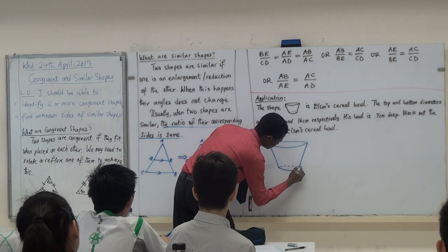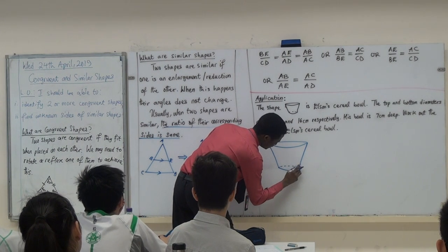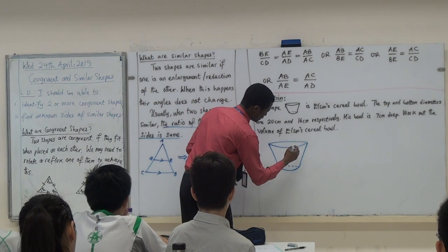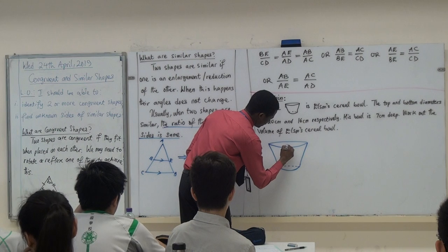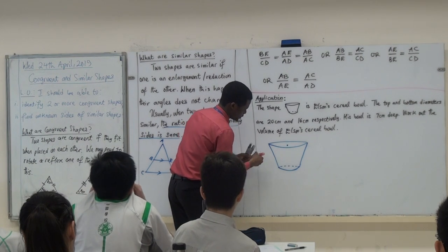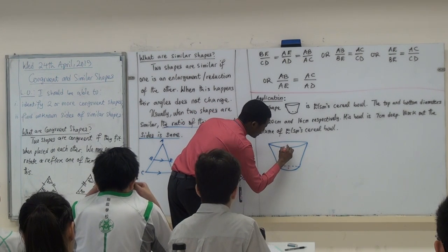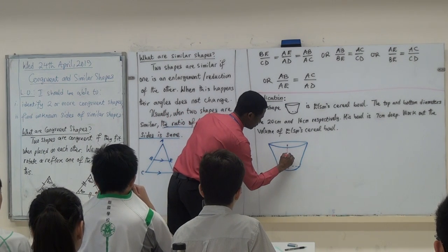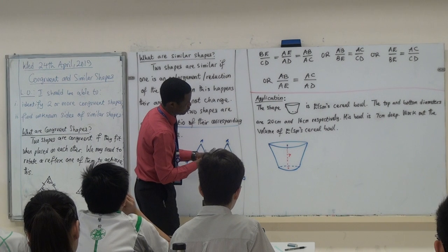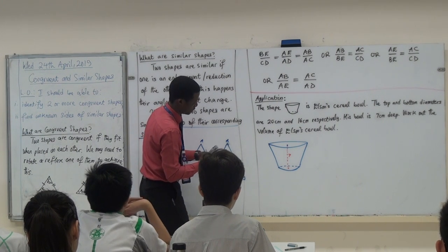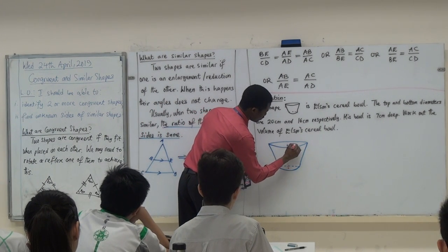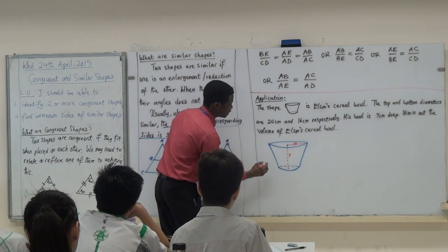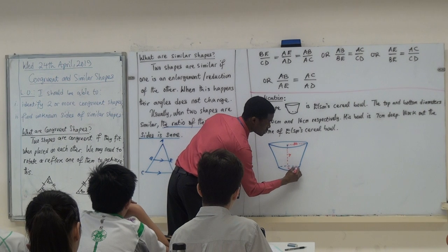Oh, you need some more. So the height of this from here to this point to the height. That's how deep it is and that's 7. What we know is that the top diameter is 20, so which means this is what? It's 10. It's 10 and this is 8.